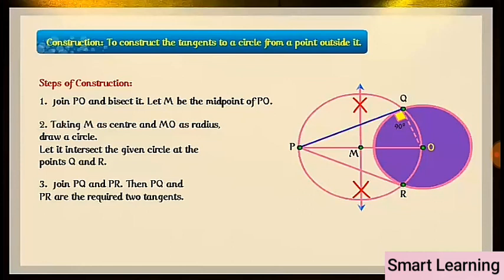So we can say that PQ is perpendicular to OQ. Since OQ is a radius of the given circle, PQ has to be a tangent to the circle.